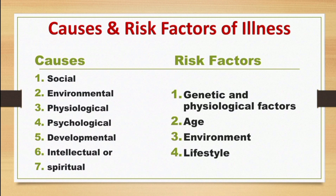Psychological causes of illness include genetics, environment, childhood trauma, stressful events like losing a loved one or being in a car accident, negative thoughts, unhealthy habits like not getting enough sleep or not eating well, and abusing drugs and alcohol, which can trigger mental illness and affect brain chemistry.